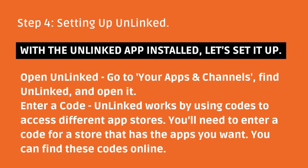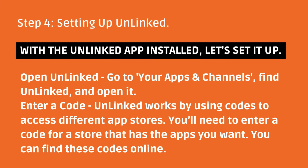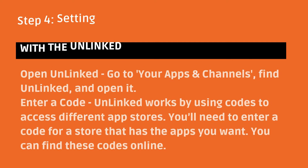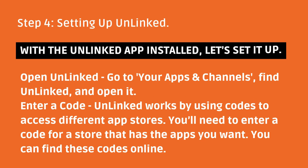Step 4: Setting Up Unlinked. With the Unlinked APK installed, let's set it up. Open Unlinked — go to your apps and channels, find Unlinked, and open it. Unlinked works by using codes to access different app stores. You'll need to enter a code for a store that has the apps you want. You can find these codes online.